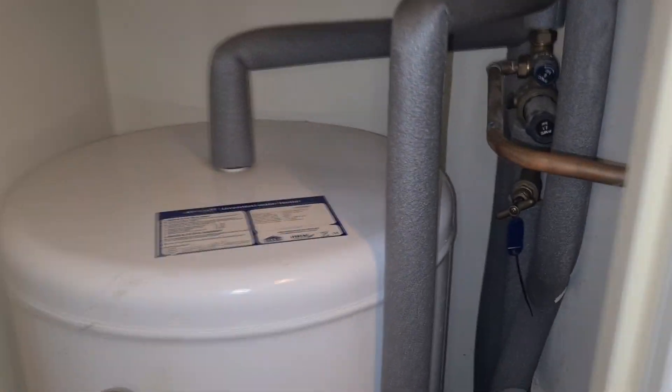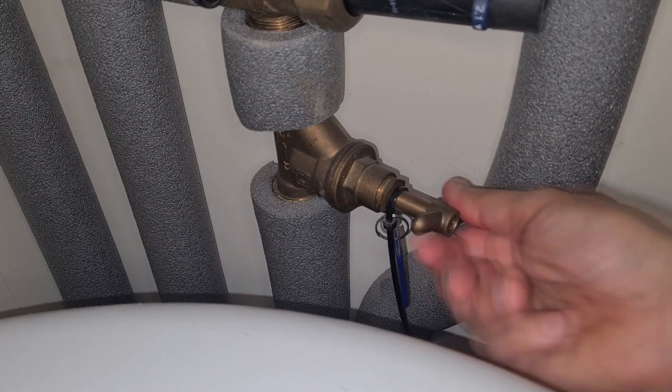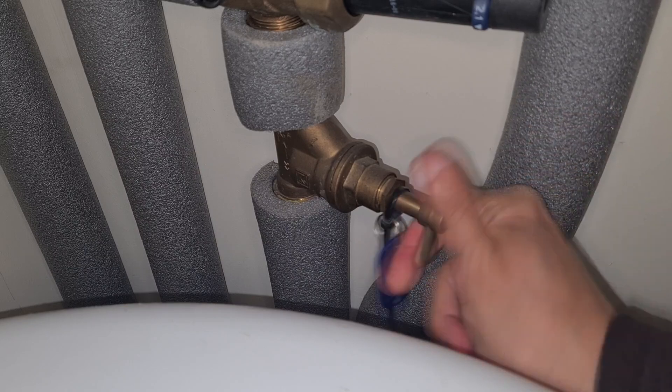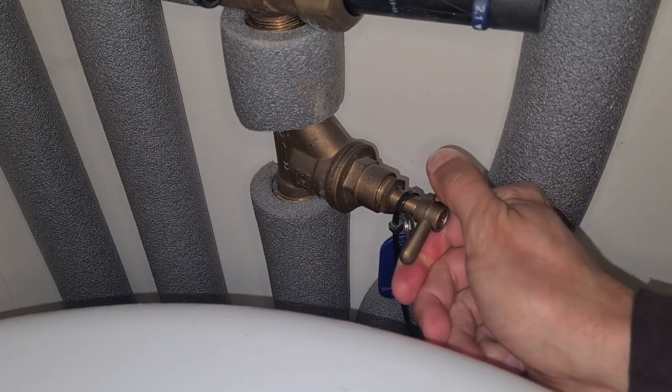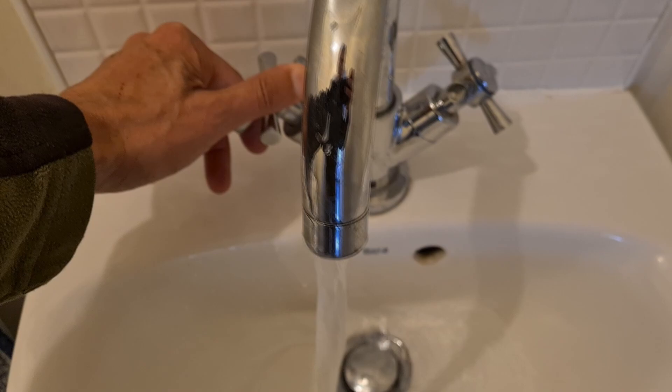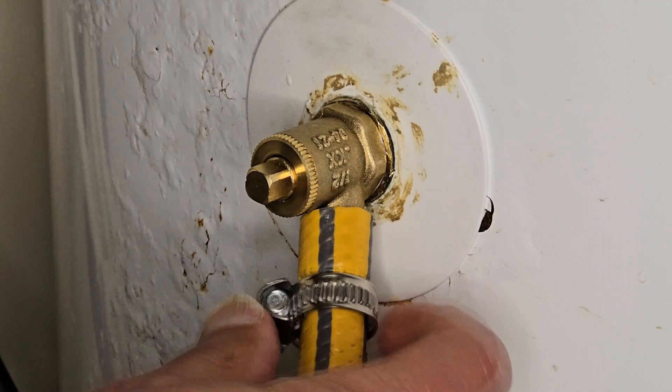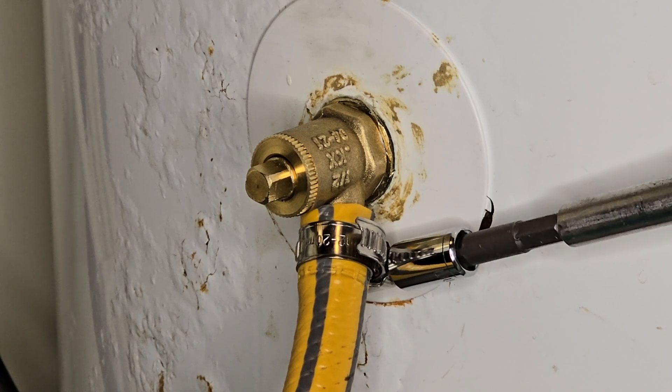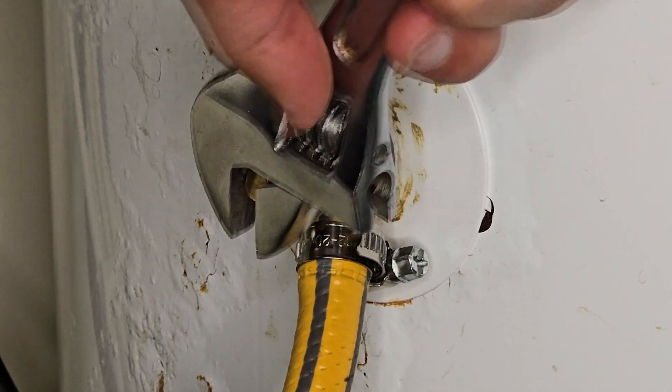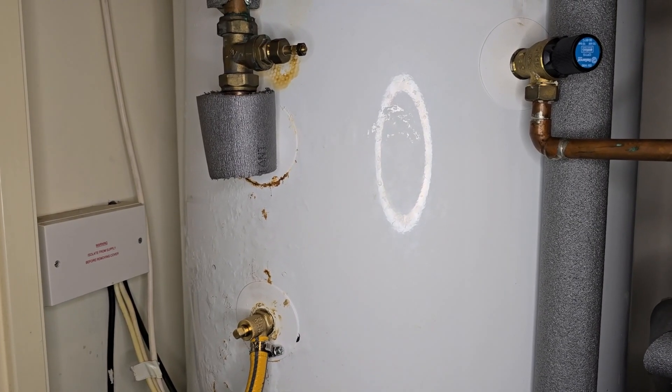The internal air bubble can be easily restored. Turn off the water supply to the cylinder. Open the lowest installed hot water tap. The cylinder needs to be drained to the level of the commissioning valve.